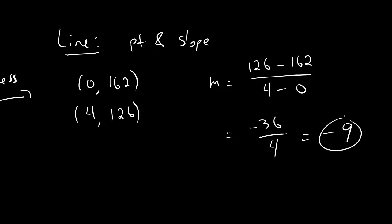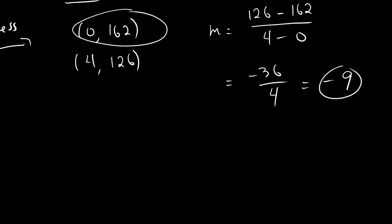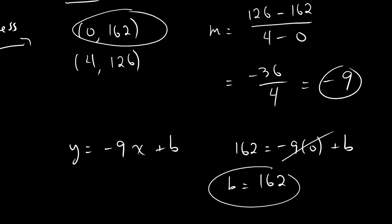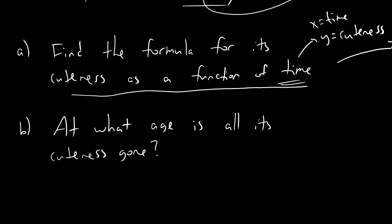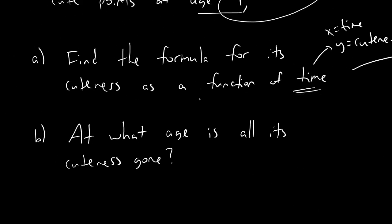Now we've got a slope, and we have a point. Let's use the easier point because it involves 0. And we do the usual thing, y equals negative 9x plus b. And now we'll plug in the point, 162 equals negative 9 times the x value 0 plus b. Multiplication by 0 kills it, and so b is just 162. So we've got our slope, we've got our y-intercept. We bring that all the way back here, and our formula for its cuteness, we can write cuteness of x is equal to negative 9x plus 162. So you've got its cuteness function. The cuteness function is negative 9x plus 162. And now part b says, at what age is all its cuteness gone?